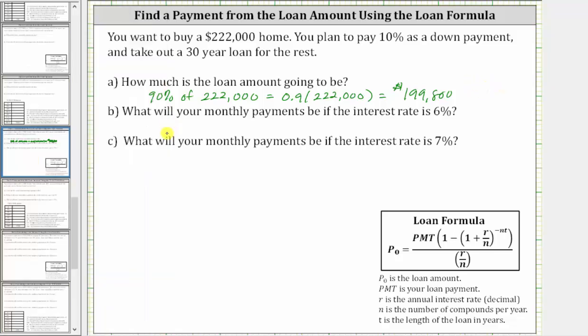And now for part B, what will your monthly payments be if the interest rate is 6%? To answer this question, we will use the loan formula shown below, where P sub zero is the loan amount, which we now know is $199,800, giving us 199,800 equals, and on the right side, PMT is the loan payment which we are solving for, so we have PMT.